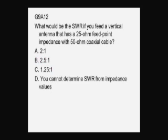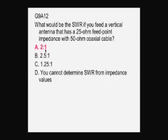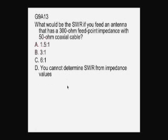What would be the SWR if you feed a vertical antenna that has a 25-ohm feed point impedance with 50-ohm coaxial cable? The ratio here is 2 to 1, isn't it? So it will be a SWR of 2 to 1. What would be the SWR if you feed an antenna that has a 300-ohm feed point impedance with a 50-ohm coaxial cable? This is 6 times this, so the SWR will be 6 to 1.